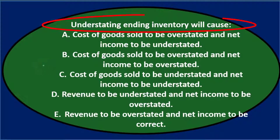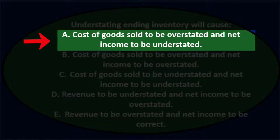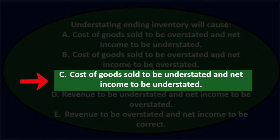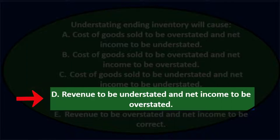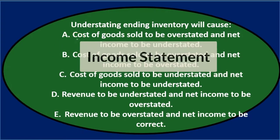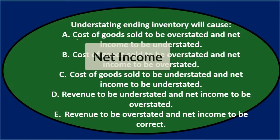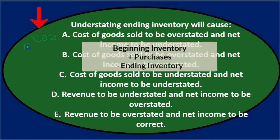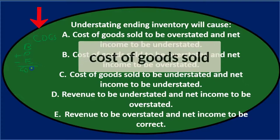Next problem: Understating ending inventory will cause — A. Cost of goods sold to be overstated and net income to be understated, B. Cost of goods sold to be overstated and net income to be overstated, C. Cost of goods sold to be understated and net income to be understated, D. Revenue to be understated and net income to be overstated, E. Revenue to be overstated and net income to be correct. We can use the cost of goods sold calculation: beginning inventory plus purchases minus ending inventory equals cost of goods sold.